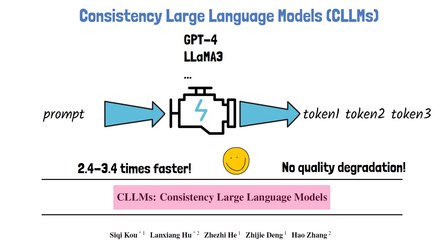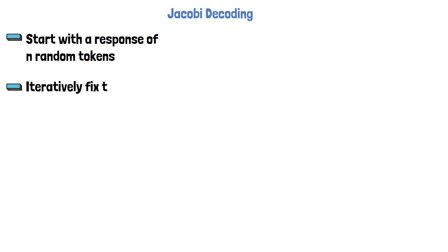The method of CLLMs is based on an existing method which is called Jacobi decoding. With this method, instead of generating a single token at a time, we generate a sequence of tokens in one pass. We feed the LLM both with the prompt and the response, which is random at first, and we iteratively fix the response sequence.